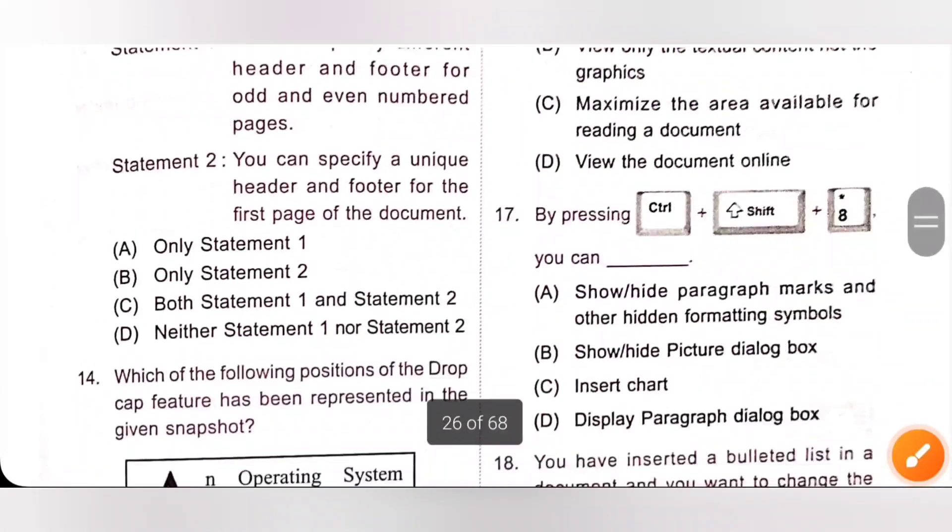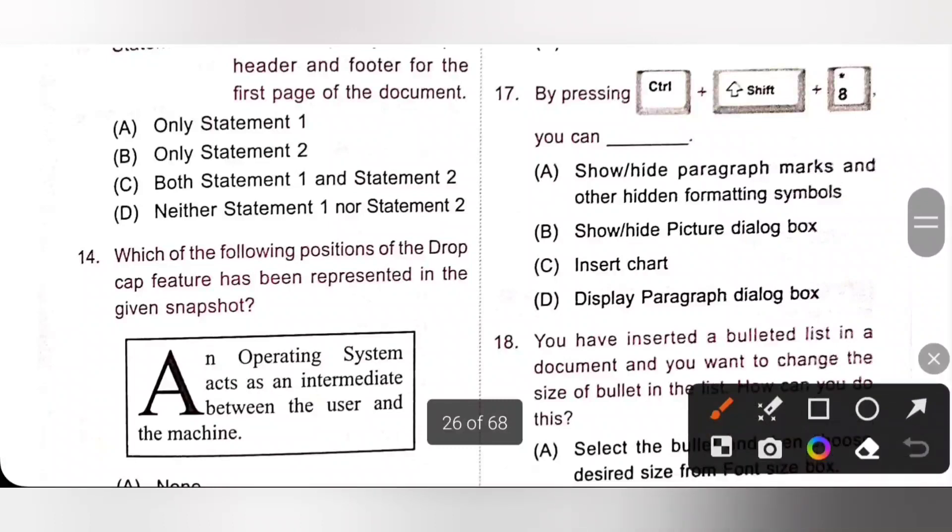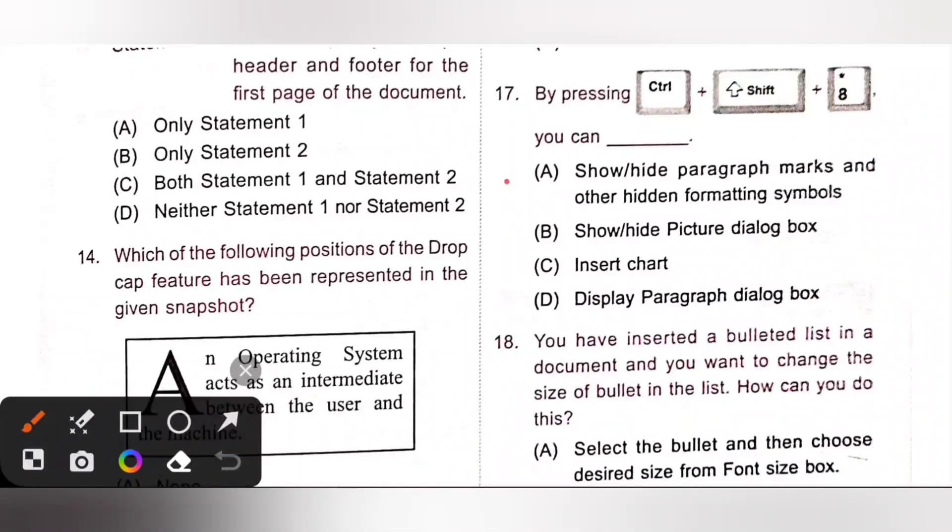Next, 17th: By pressing Ctrl plus Shift plus 8, you can show or hide paragraph marks and other hidden formatting symbols. Option A is the correct answer.